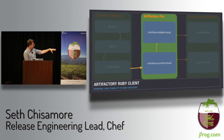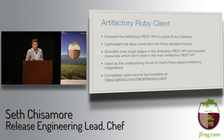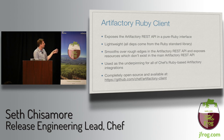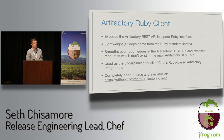Next we'll chat about the Ruby client we've written for Artifactory. All of Chef's Ruby-based Artifactory integrations for publishing, promotion, and configuration are built on top of this client. It exposes the Artifactory REST API in a pure Ruby interface — very lightweight, all dependencies from the Ruby standard lib. It smooths over rough edges in the Artifactory REST API and exposes new resources that don't exist in the REST API — managing repo layouts, backups, LDAP settings, SMTP settings, base URL. It's open source and used as the underpinning for all our Artifactory integrations.